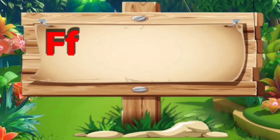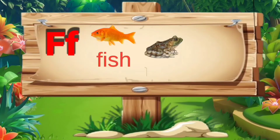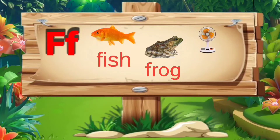F. F for fish: F, I, S, H — fish. F for frog: F, R, O, G — frog. F for fan: F, A, N — fan.